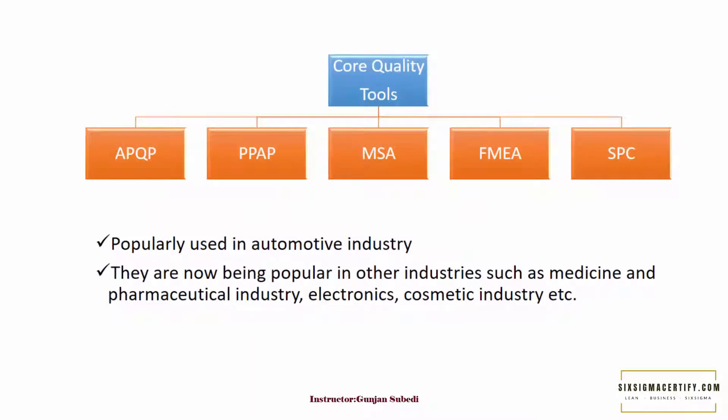These tools are very important in today's scenario, because not only have they been used and practiced in the automotive industry, but also in other industries too, such as medicine and pharmaceutical industry, electronics, cosmetic industry, etc. So if you are a quality auditor, or if you want to learn or participate in quality audits in the future, these topics are of core importance. The summary is, these topics are very important for quality management, production planning and improvement, and quality improvement too.